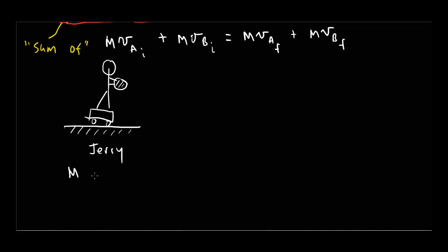So let's say the mass, let's come up with some numbers. The mass of Jerry is 50 kilograms. Just to make life easy, we'll give it a nice easy number. The mass of Jerry is 50 kilograms. The mass of the ball is 5 kilograms. And let's say they start from rest. So V initial is 0.